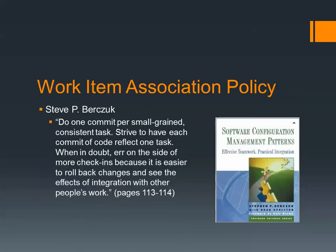I wholeheartedly agree with Steven Burkuch in his book on software configuration management patterns where he states: 'Do one commit per small grain consistent task. Strive to have each commit of code reflect one task. When in doubt, err on the side of more check-ins because it is easier to roll back changes and see the effects of integration with other people's work.' Enforcing that check-ins be associated with a single task encourages contributors to complete discrete pieces of work and commit them into source control as a single atomic transaction. This allows for better traceability between work item tracking and source control, the ability to leverage changeset rollbacks, and cherry-pick merging.